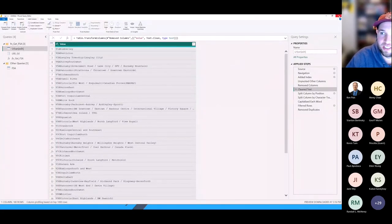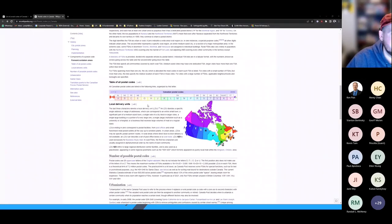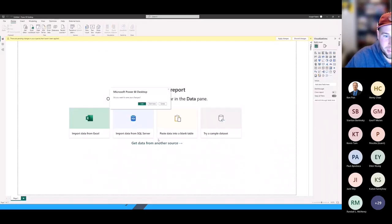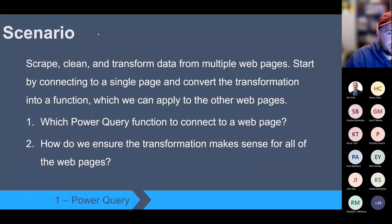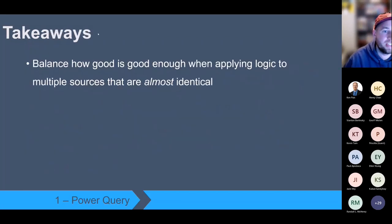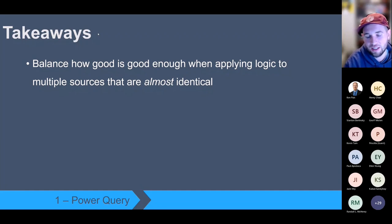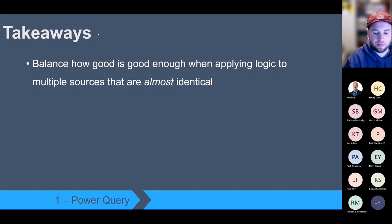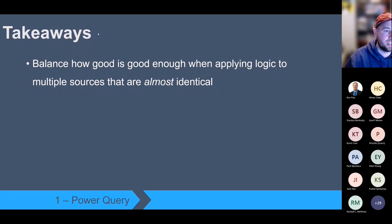If there are no more questions, I can safely close the example file. So we just went through the Power Query scenario. A couple of takeaways: we need to balance how good is good enough when applying logic to multiple sources that are almost identical. We saw that for some provinces and territories, their web pages weren't exactly the same as the British Columbia one. But if we can get the key information — in our case a clean FSA — even if the description isn't exactly what we wanted, sometimes trying to clean up that description further is the tradeoff we need to consider.